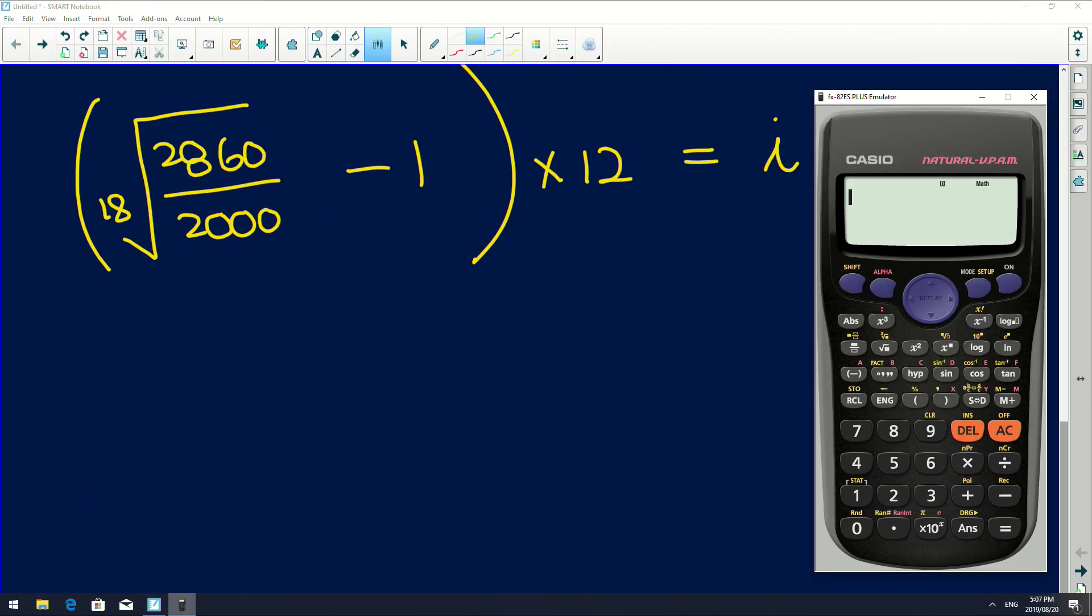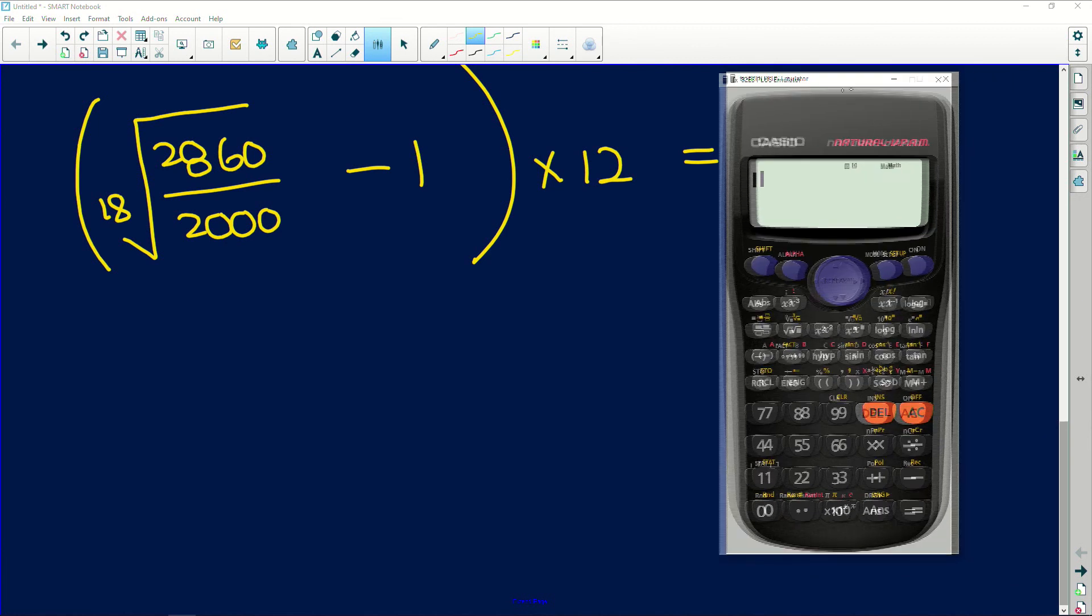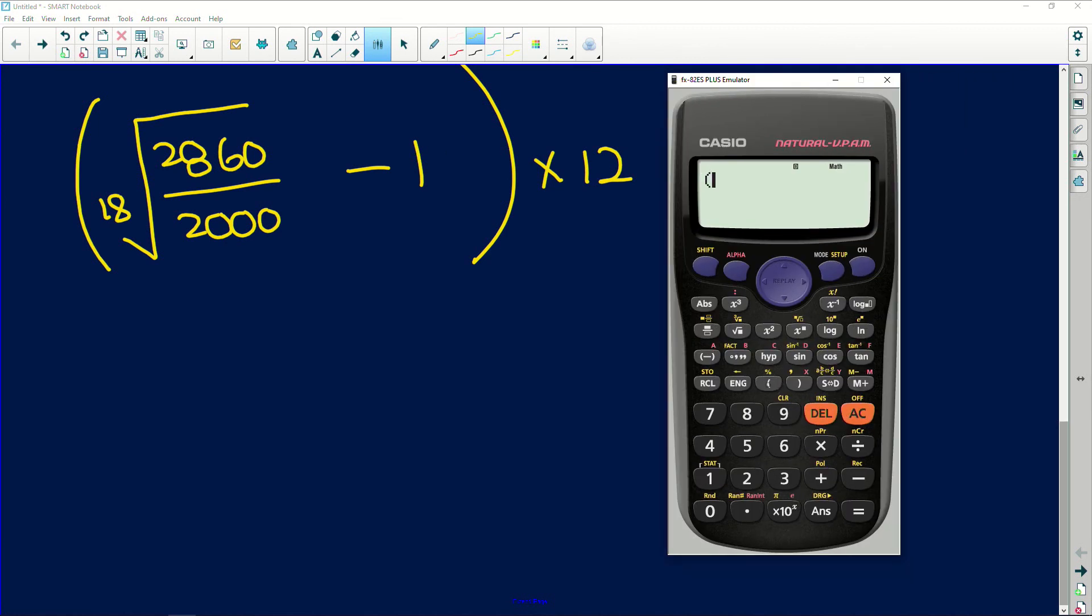So let's work this out first. Let me get my calculator up. So type it in exactly how you've written it here. Open brackets. Now to get to the 18th root we shift X to the power of something and we're going to get this here where we can fill in which root we're trying to get to. So the 18th root.